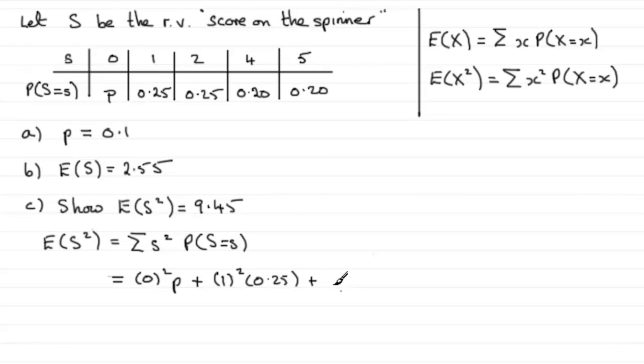And again, I'll just show the working here so that the examiners would hopefully know that I appreciate what we've got to do. So 4 squared times 0.20 plus 5 squared multiplied by 0.20.